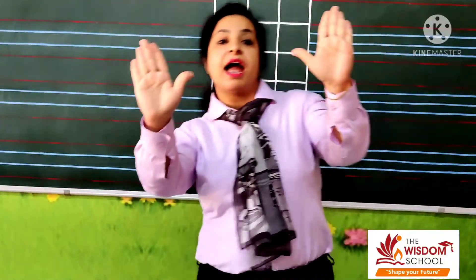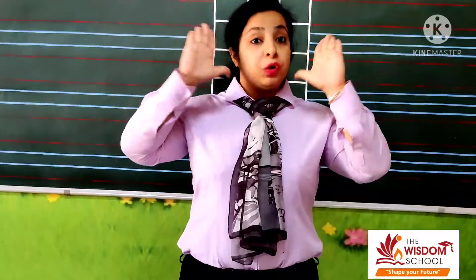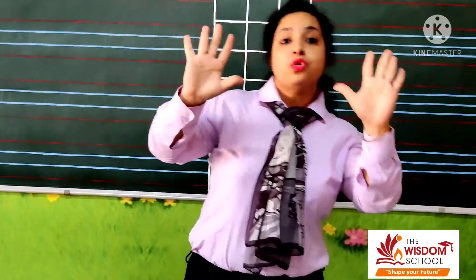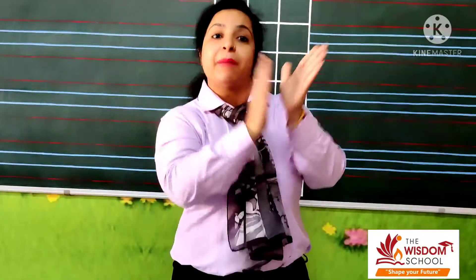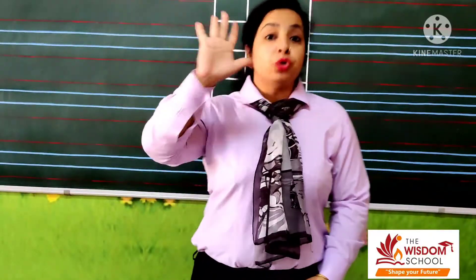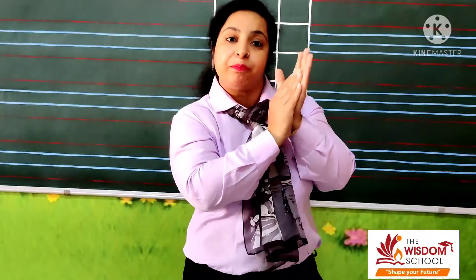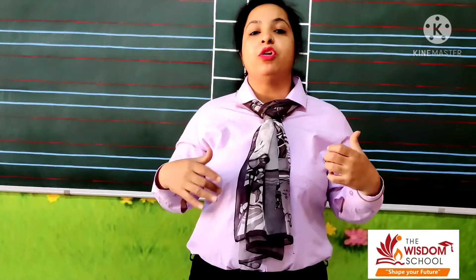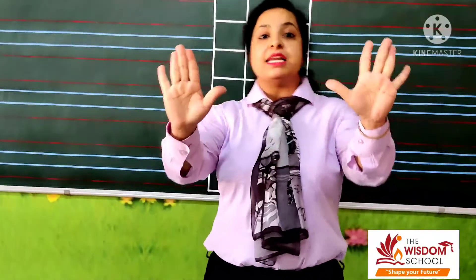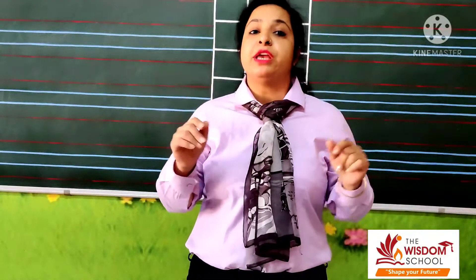Two little hands go — hamaari jo ye first line hai. Toh two hands are na hamaare paas. Two little hands go clap, clap, clap. Clear hua aap ko? Body part ke upar hi hai. Hamaari hands kitne hai? Two. Toh kaisa boli ke? Two little hands go clap, clap, clap. Abhi hamaari paas feet kitne hai? Two hai na.